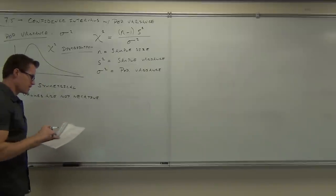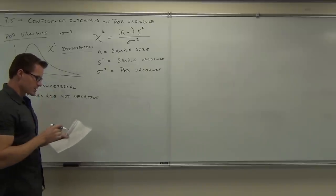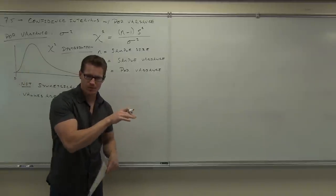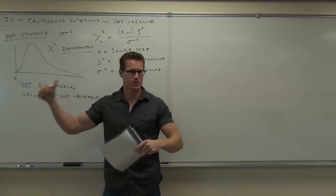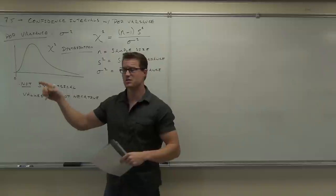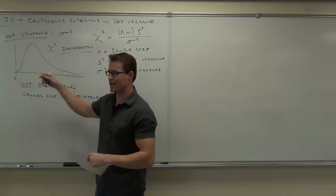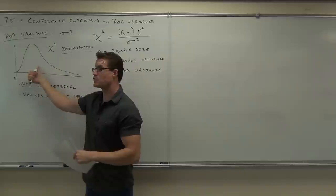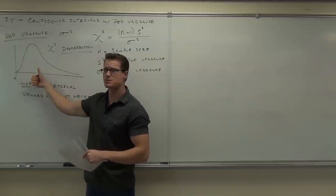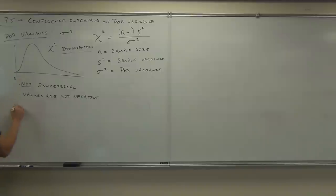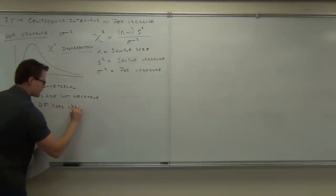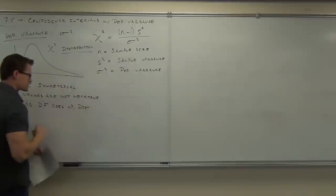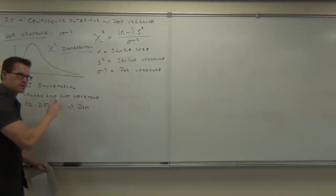This distribution also deals with degrees of freedom. One thing you need to know is that as degrees of freedom goes up, this distribution has less and less of a tail — in other words, as your sample size goes up, your degrees of freedom goes up, and this distribution becomes more symmetrical. It never reaches perfect symmetry, but it becomes more symmetrical.